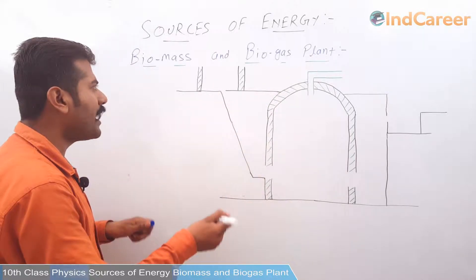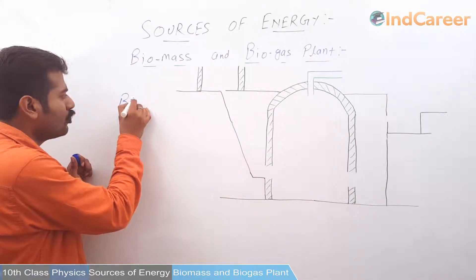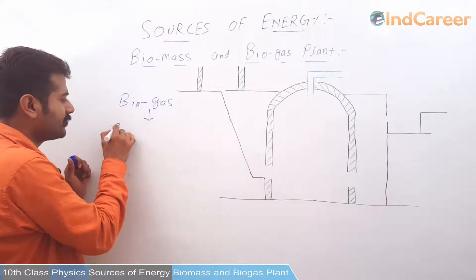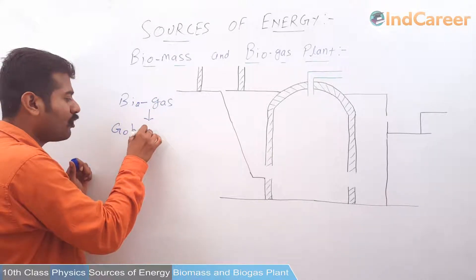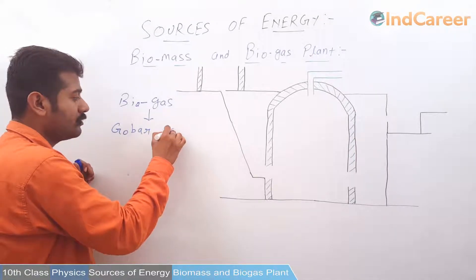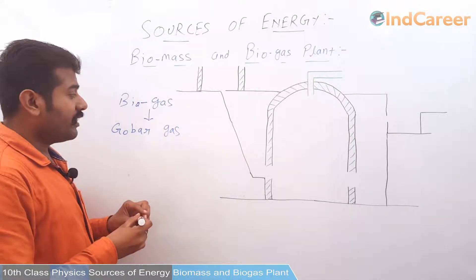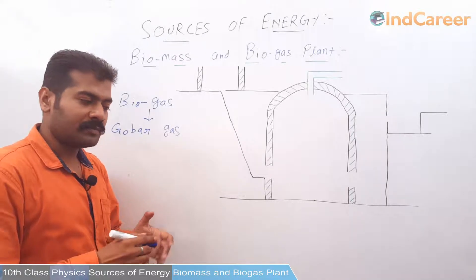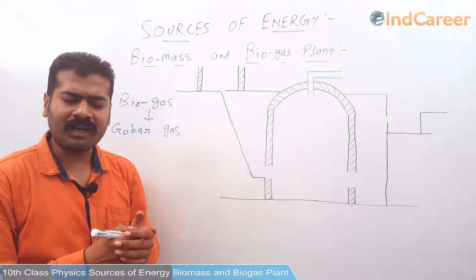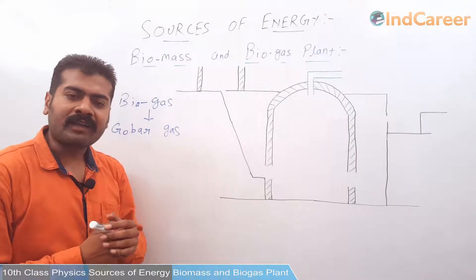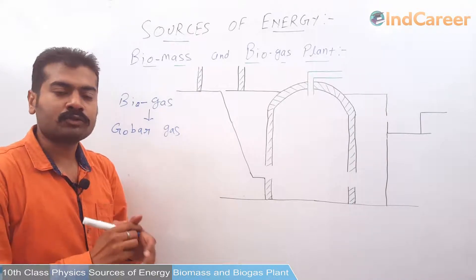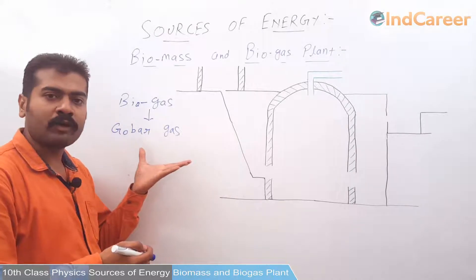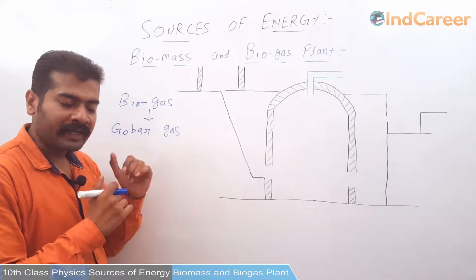The other name of biogas is also known as gobergas. Why? Because this gas is formed from raw materials that are mostly cow dung, animal dung, cattle dung, and poultry waste. So all these are the biomass, and the biomass results into biogas, which is also known as gobergas.